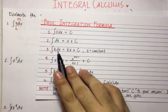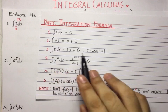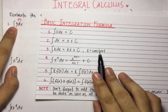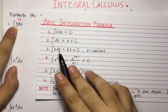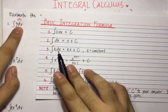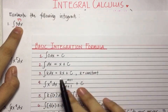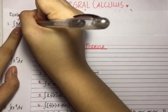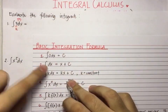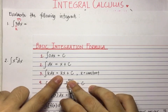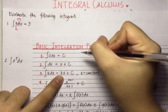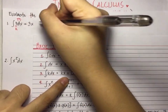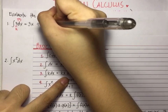The integral of k times dx, where k is constant. We have here 3, which is constant, times dx. So applying the rule, this is equal to k, which is 3, then copy x, then plus c.